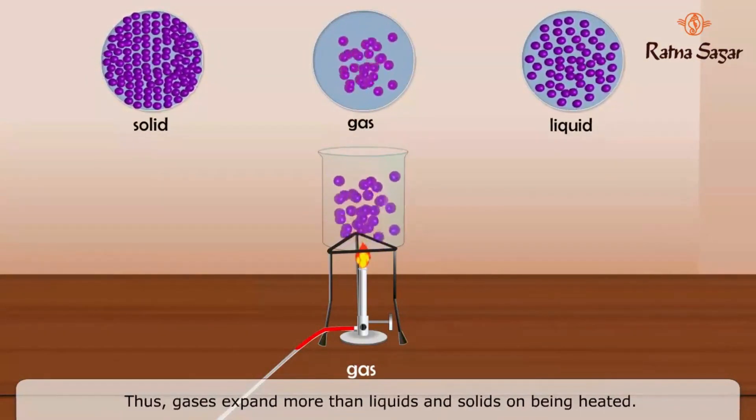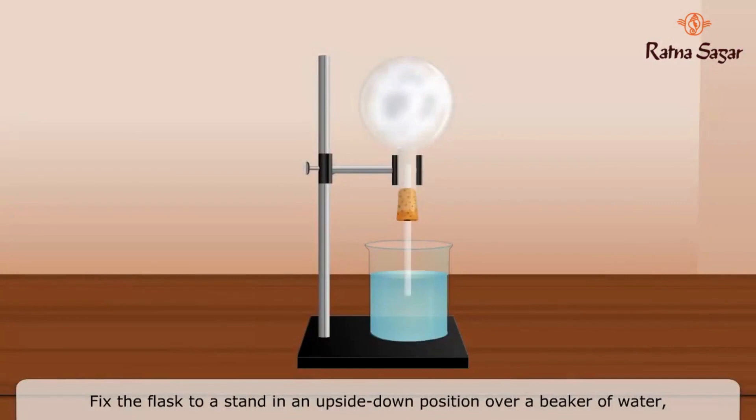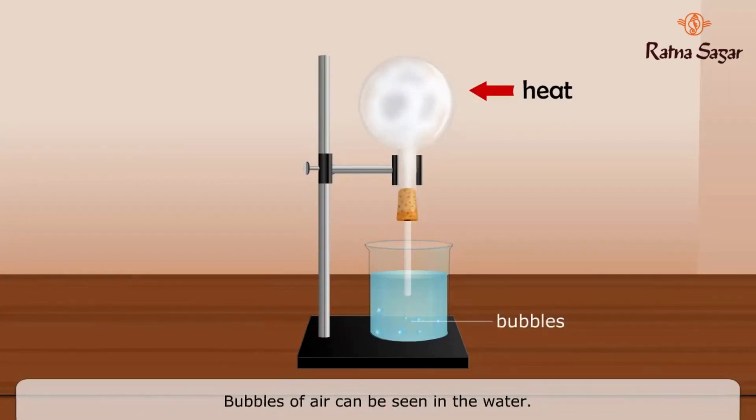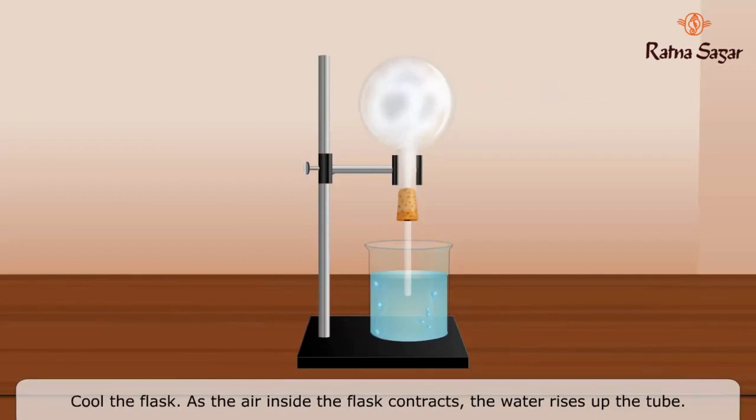Fix the flask to a stand in an upside down position over a beaker of water so that the glass tube dips inside the water. Heat the flask at the top. As the air in the flask expands, it escapes out of the flask through the tube into the beaker containing water. Bubbles of air can be seen in the water. Cool the flask. As the air inside the flask contracts, the water rises up the tube. This shows that gases expand on heating and contract on cooling.